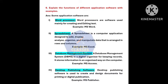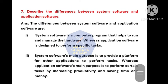Question number seven: Describe the differences between system software and application software. System software is a computer program that helps to run and manage the hardware, whereas application software is designed to perform a specific task. System software's main purpose is to provide a platform for other applications to perform tasks, whereas application software's main purpose is to perform certain tasks by increasing productivity and saving time and money.